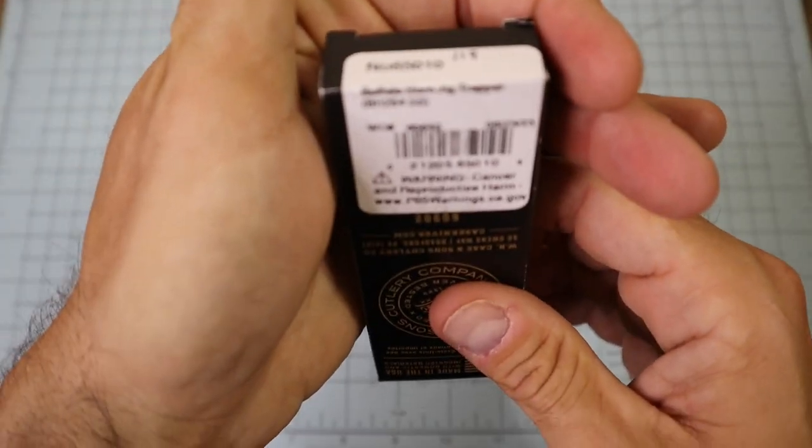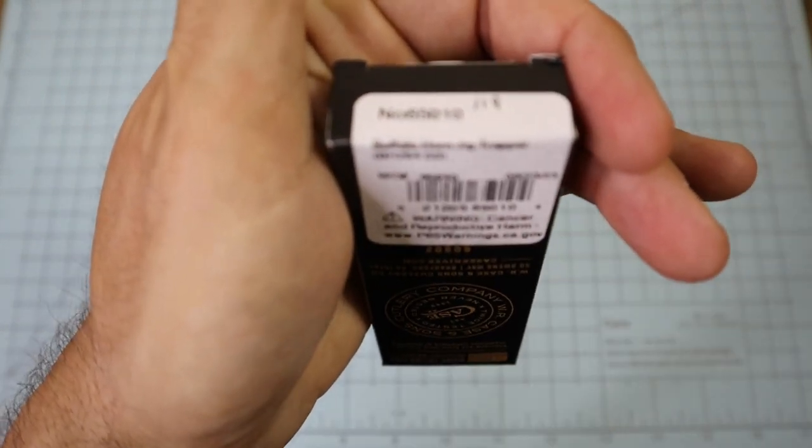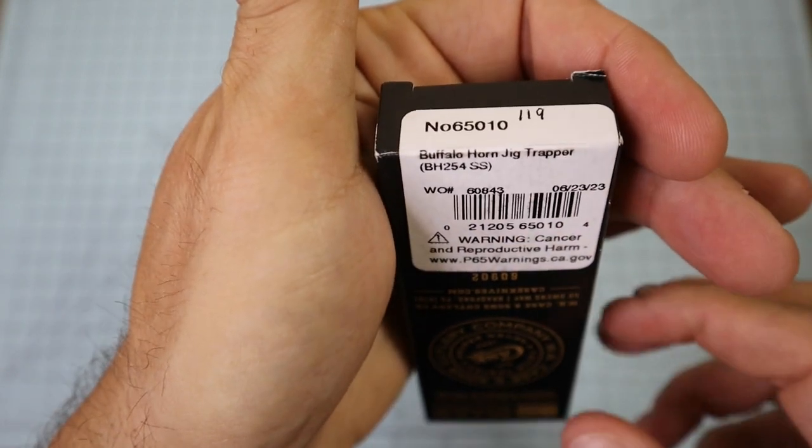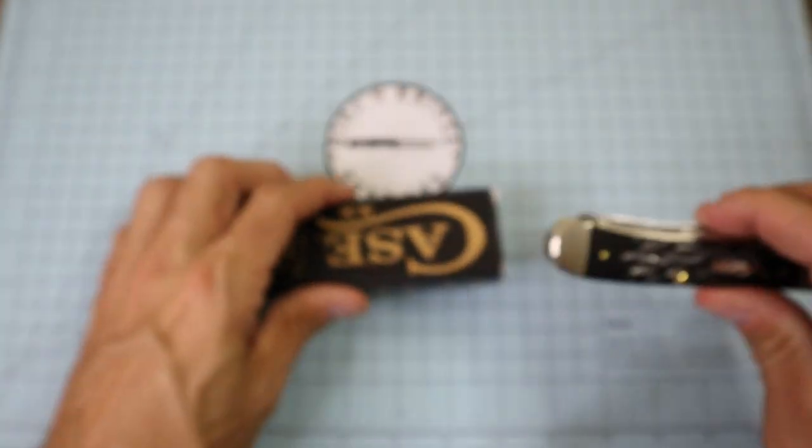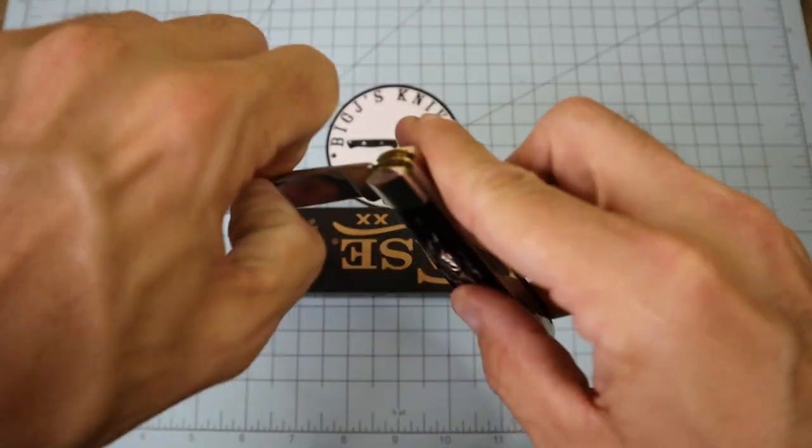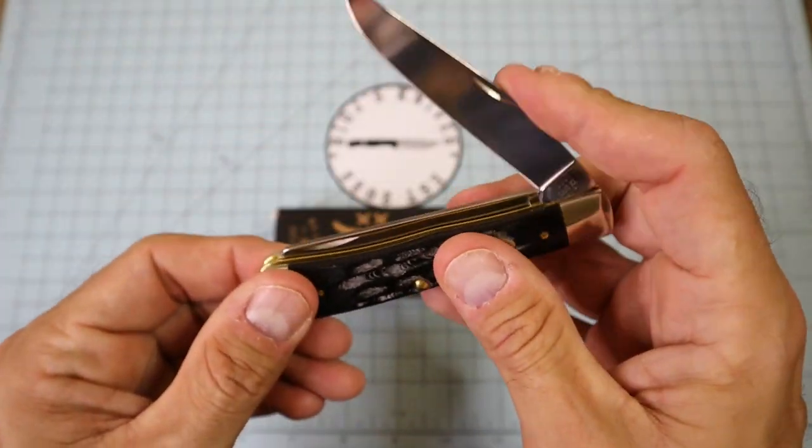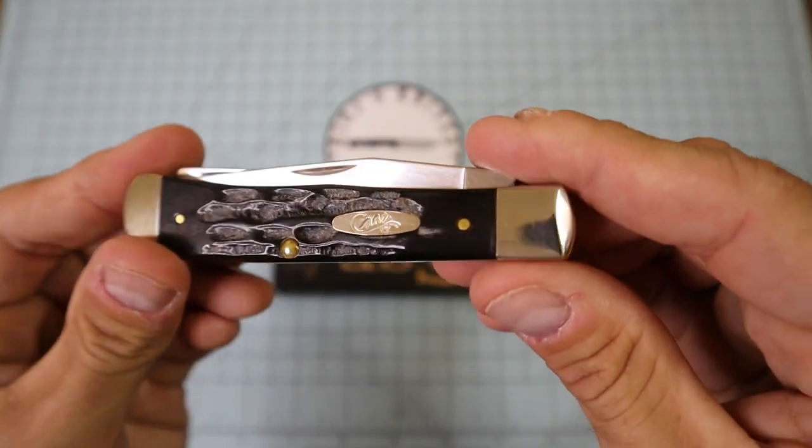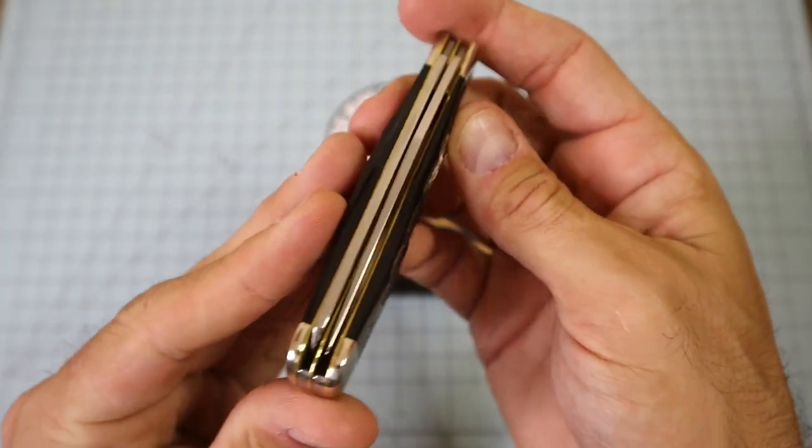Let's look at the tag here real quick. We got the buffalo horn jig trapper BH254SS. It is a 2023 model and it also has your seven dots on your main clip point blade to show it's a 2023 as well.